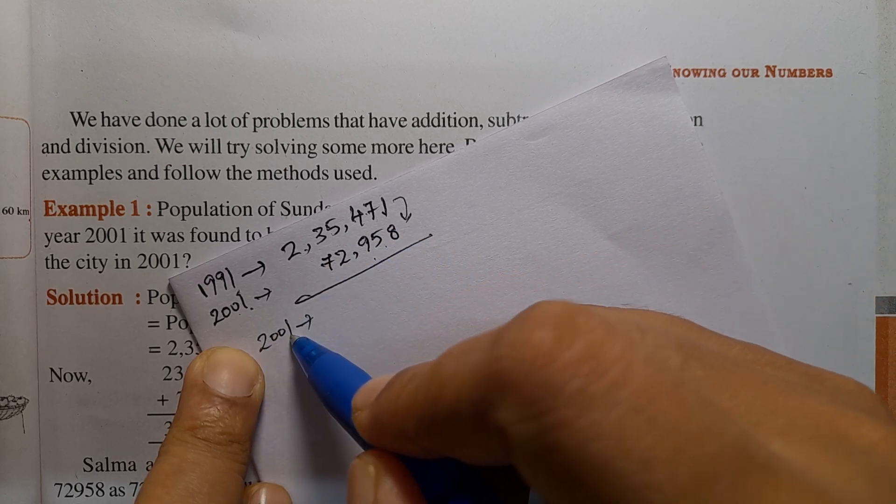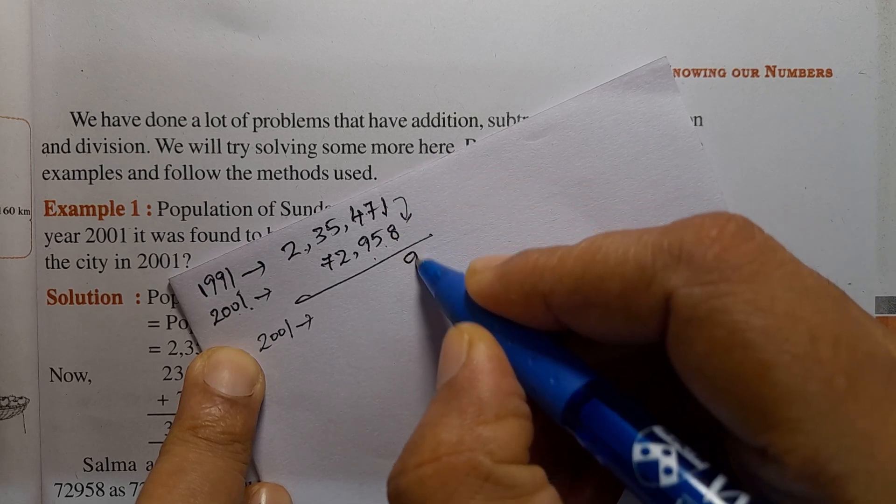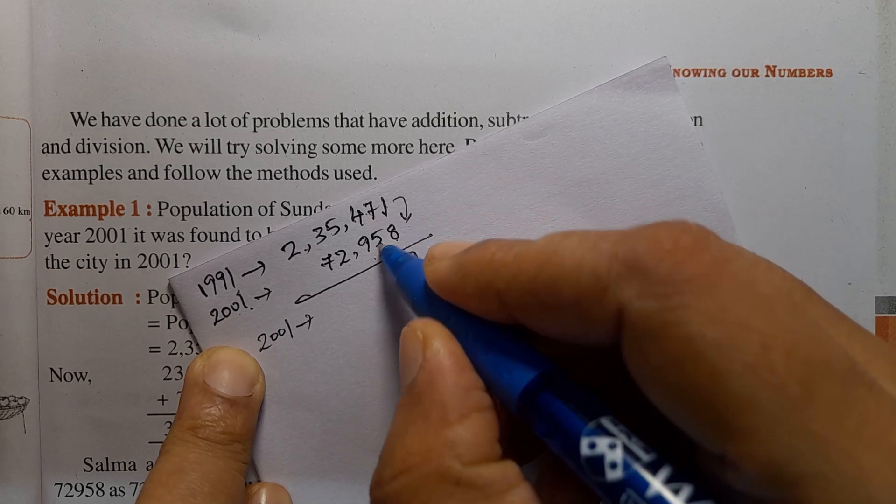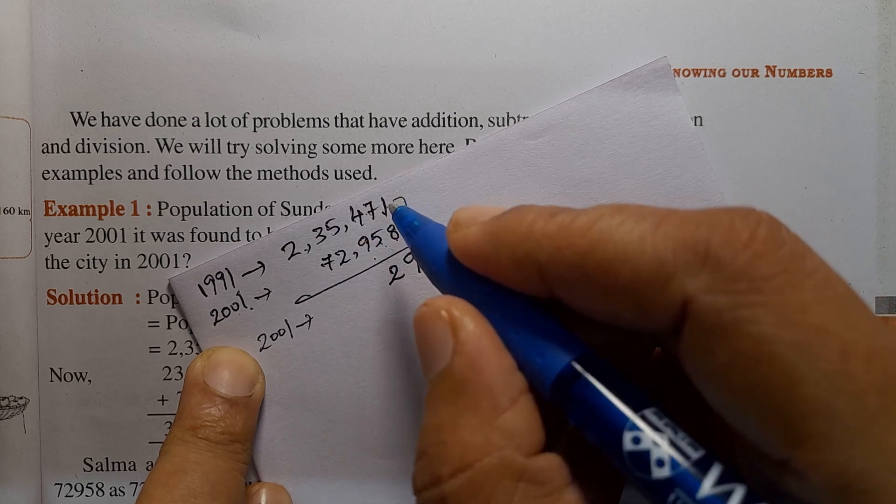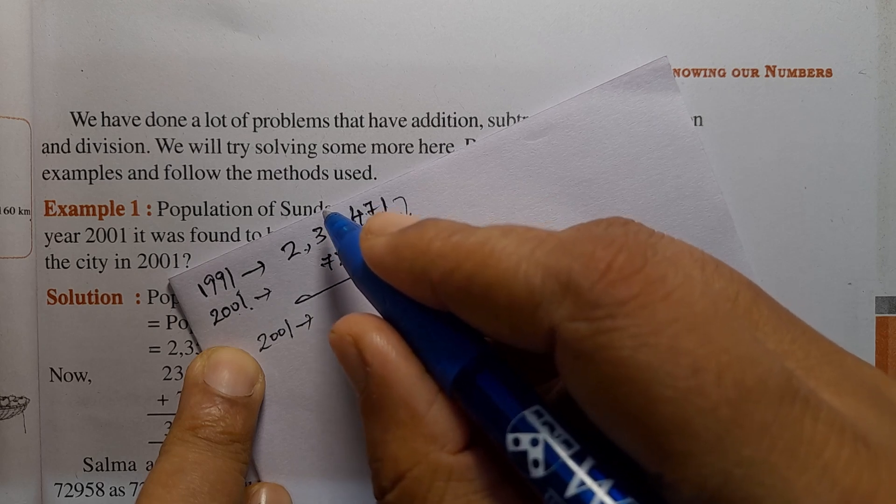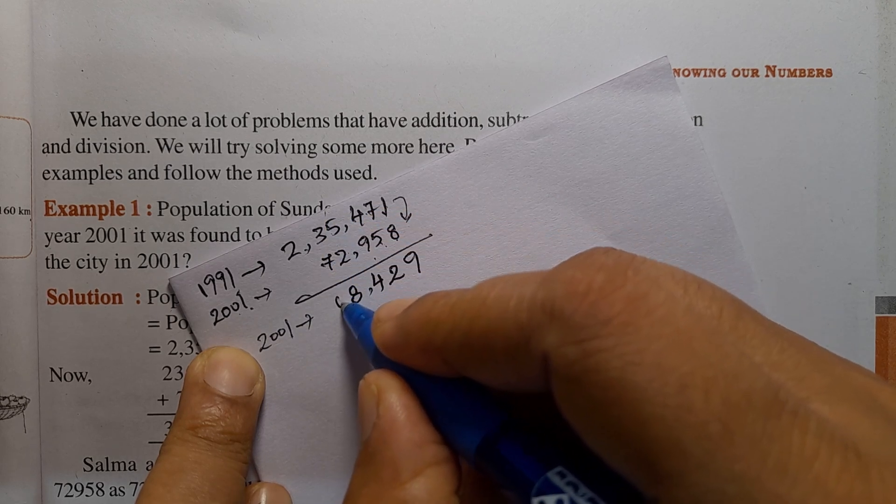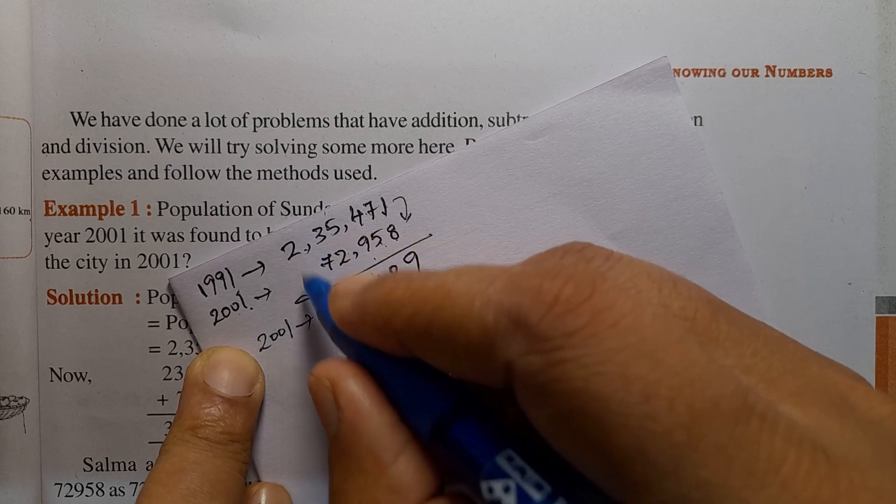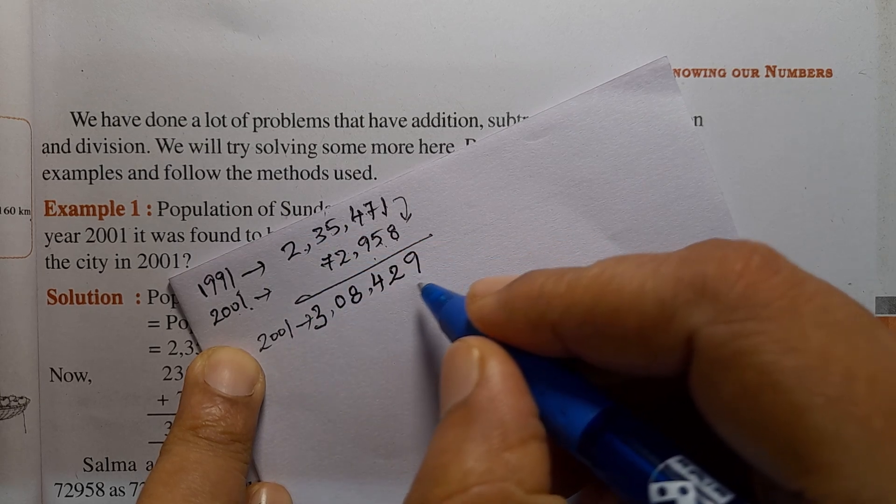8 plus 1 is 9. 7 plus 5 is 12, we get 2, carry 1. 9 plus 1 is 10, 10 plus 4 is 14, so 4, carry 1. 5 plus 1 is 6, 6 plus 2 is 8. 7 plus 3 is 10, so 0, carry 1. 1 plus 2 is 3. So, 3,08,429.